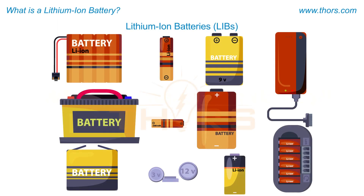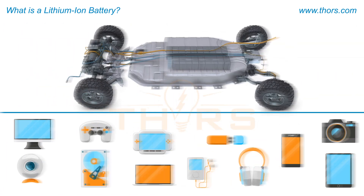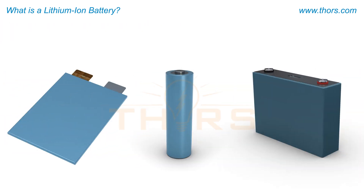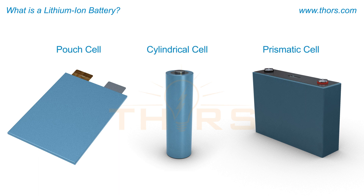Lithium-ion batteries (LIBs) are the most common and dominant secondary batteries and are rechargeable. LIBs are widely used in electric vehicles and portable electronics. The three main forms of lithium-ion batteries are pouch cell, cylindrical cell, and prismatic cell.